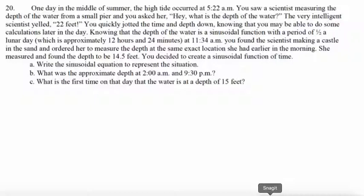You're at a maximum depth initially of 22 feet. 6 hours and 12 minutes later, which is halfway through the cycle, you'll go from a maximum to a minimum. So you ask the scientist what's the depth halfway through that cycle, and the scientist says 14.5 feet. So we need to create that sinusoidal function of time.